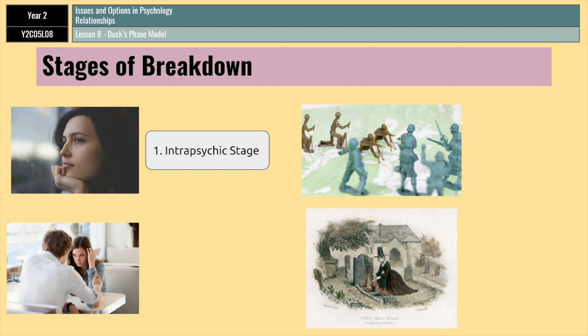After that, they reach what's known as the dyadic stage. The dyadic stage is when a person feels able to confront their partner and voice their dissatisfaction with the relationship. At this stage, there are a lot of complaints from the partner that initiates the breakup — common complaints involve a partner's commitment to the relationship, for example. The dissatisfied partner also starts to rethink the alternatives that he or she might have to their current relationship.